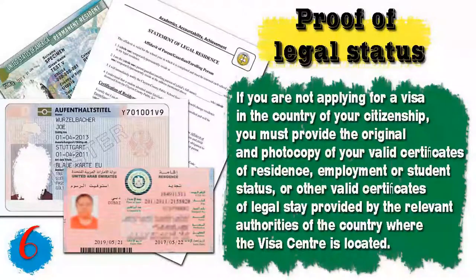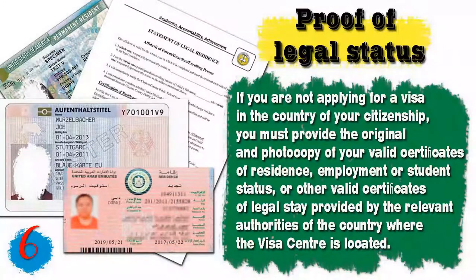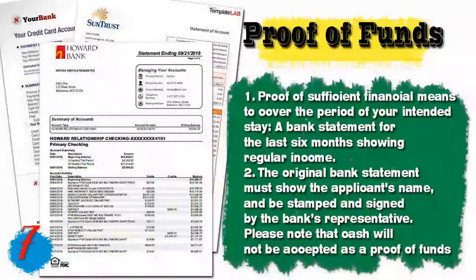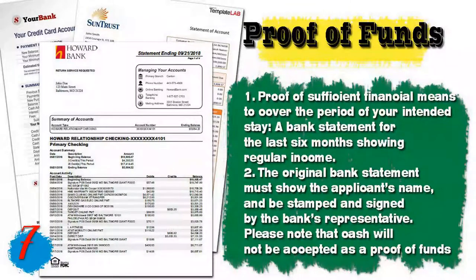If you are an owner or partner in a company, you will need a copy of the company commercial registry, and a tax card should also be presented. If you are a student, an enrollment letter should be provided. Document number six: for foreigners not applying in their country of citizenship, you must provide the original and photocopy of a valid certificate of residence, employment or student status, or other valid certificate of legal stay from the relevant authorities of the country where the visa center is located. Document number seven is proof of funds - a bank statement for the last six months showing regular income, stamped and signed by the bank representative. Cash will not be accepted; if you don't have a bank account, proof of any assets can be presented.